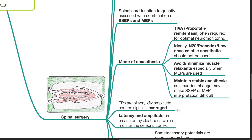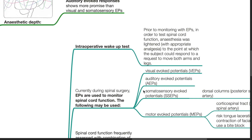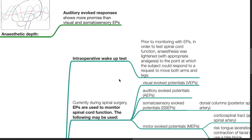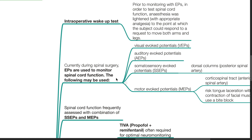EPs are used in spinal surgery to monitor spinal cord function. Historically, an intraoperative wake-up test was used. Prior to monitoring with EPs, anesthesia was lightened with appropriate analgesia to the point at which the subject could respond to a request to move both arms and legs. Currently, during spinal surgery, EPs are used to monitor spinal cord function.